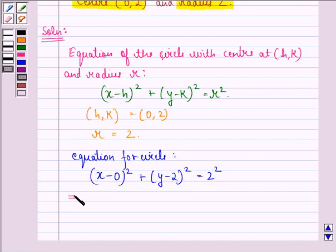This implies x square plus y square plus 4 minus 4y is equal to 4. Here we have applied the formula (a minus b) the whole square is equal to a square plus b square minus 2ab.